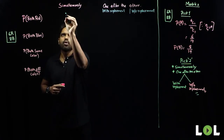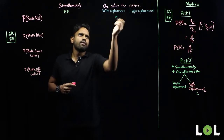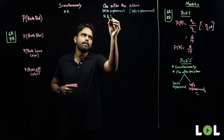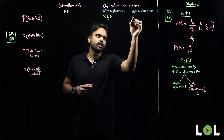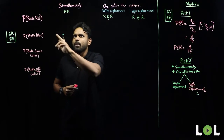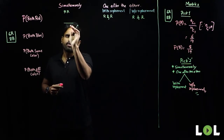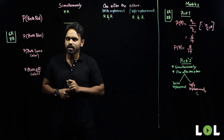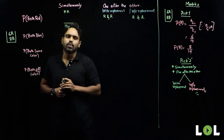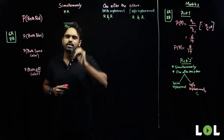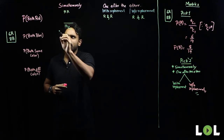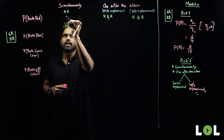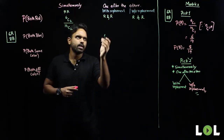The first question: probability of getting both red. For the simultaneous case, total number of cases — selecting two marbles out of fourteen — is fourteen C two. Favorable cases: selecting two red marbles out of six red marbles is six C two. For the one after the other case: total number of cases is fourteen C one, that is fourteen. Favorable cases of getting red is six, and I'll multiply for the next pick.